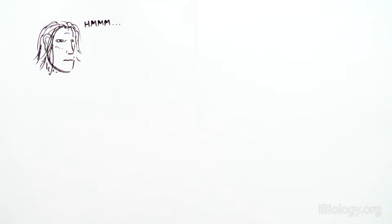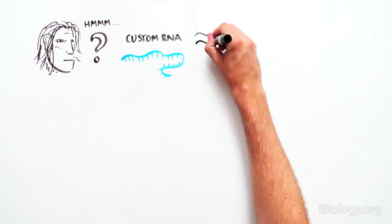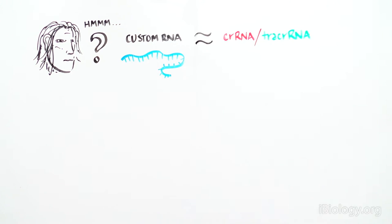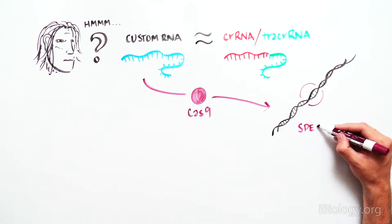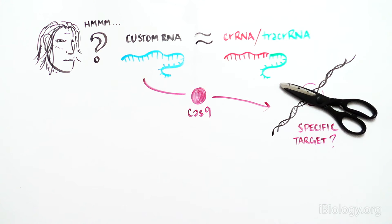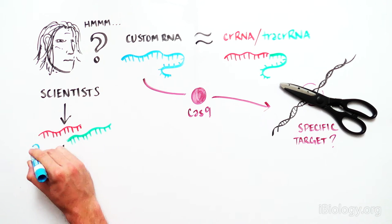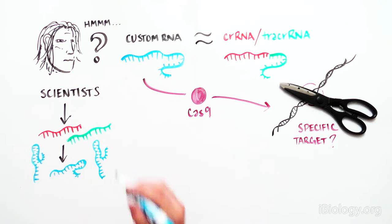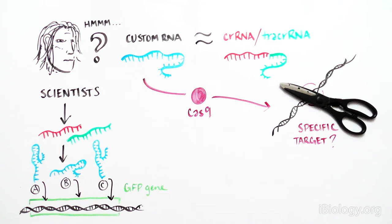The scientists then wondered if they could engineer one RNA molecule that mimicked the structure of the CRISPR-RNA and tracer RNAs bound together that would guide Cas9 to cut DNA at a specific location. The scientists designed one RNA molecule that consisted of the red and green RNA molecules connected together by a hairpin structure. In this case, they engineered the RNAs to target specific sequences of the gene encoding the green fluorescent protein, GFP.